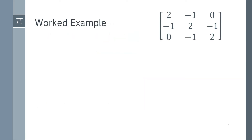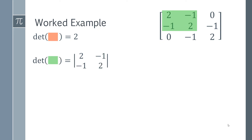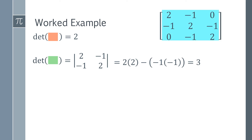Now let's look at a worked example using Sylvester's criterion to prove that a specific matrix is positive definite. The first step is to go through all the sub-matrices. Starting with the top left, the determinant is simply two. Then for the next upper left two-by-two sub-matrix, you compute two times two minus minus one times minus one, which gives you three.